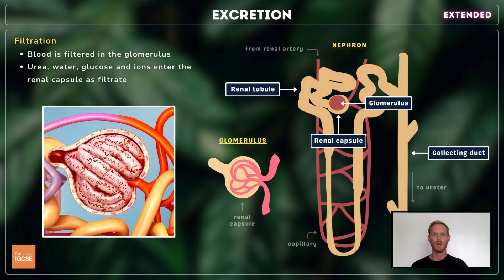As blood flows into the narrow capillaries of a glomerulus, pressure increases forcing some of its contents outwards through the thin capillary walls. This solution is known as filtrate and contains water, glucose, urea and ions.